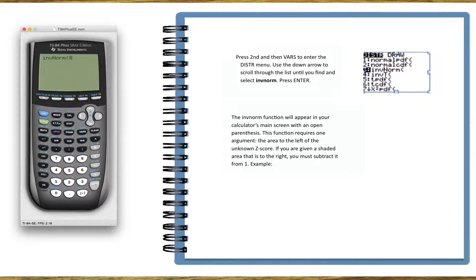Now the INVNORM function will appear with an open parenthesis. This function requires one argument, and we're entering the area to the left of the unknown z-score.